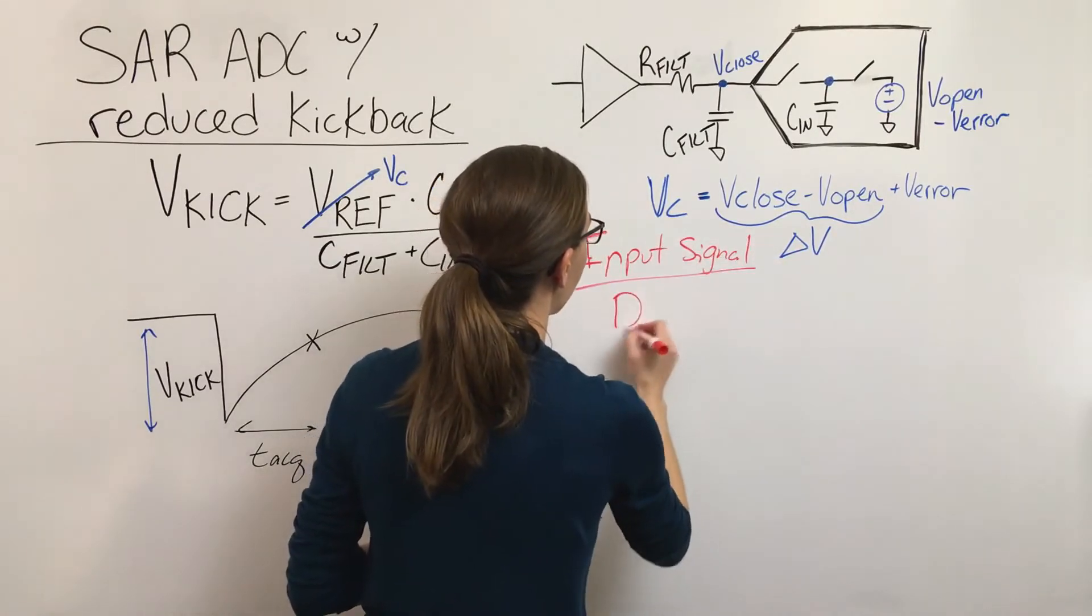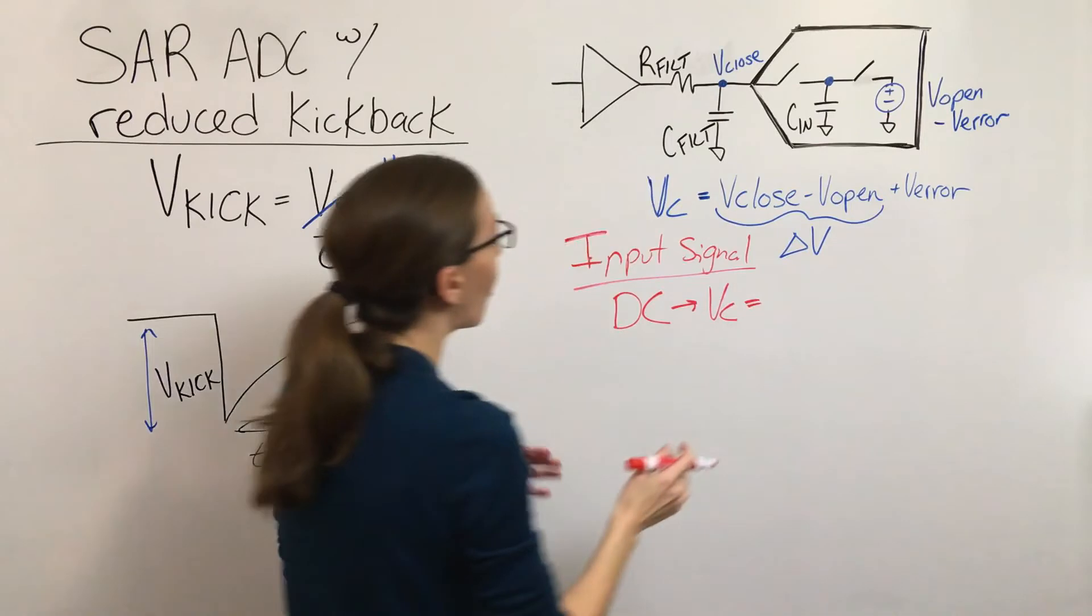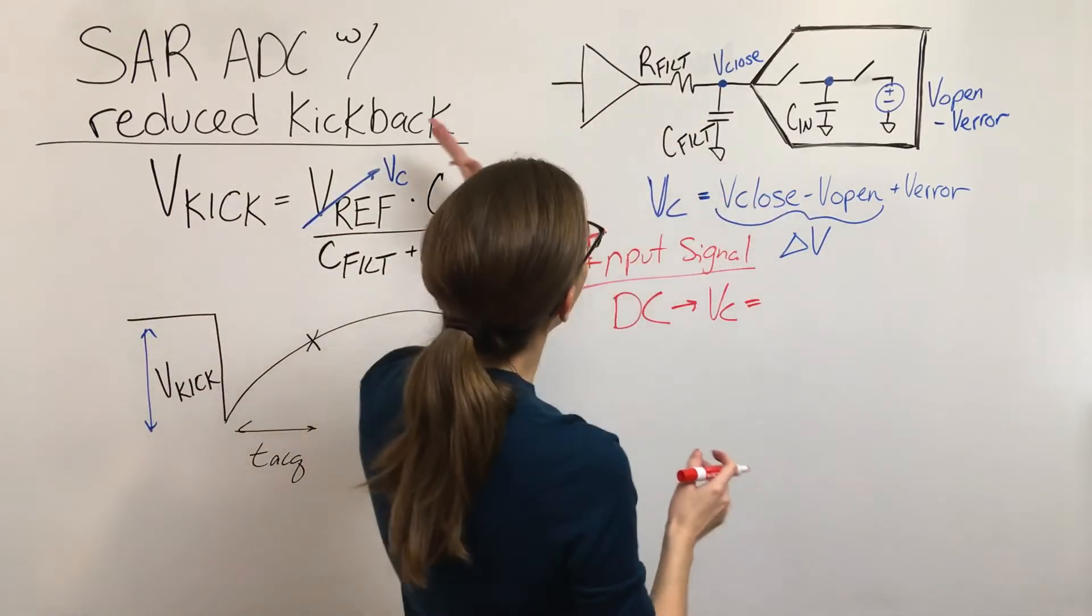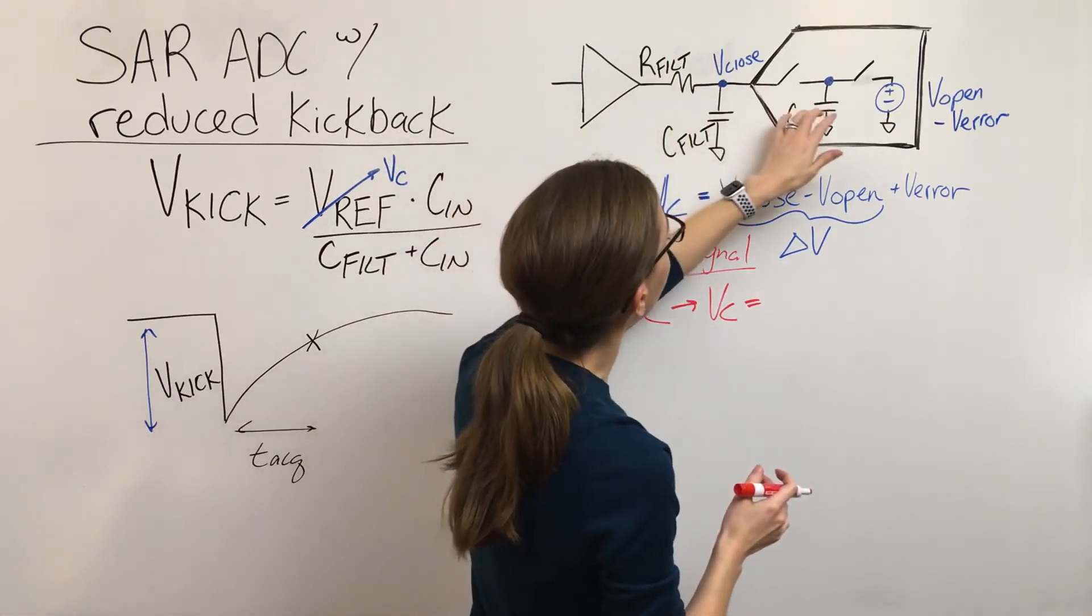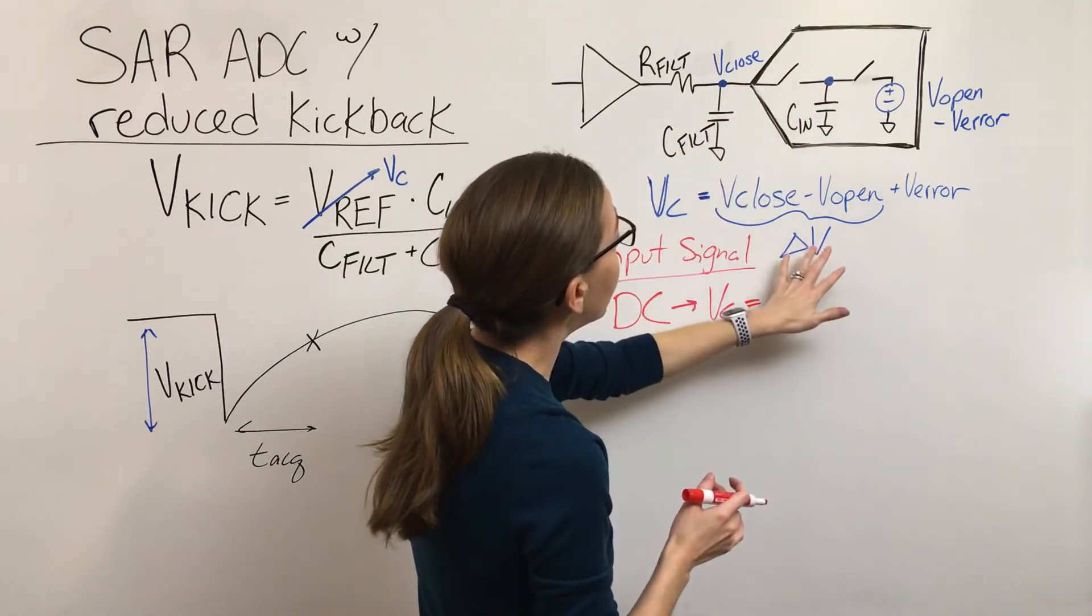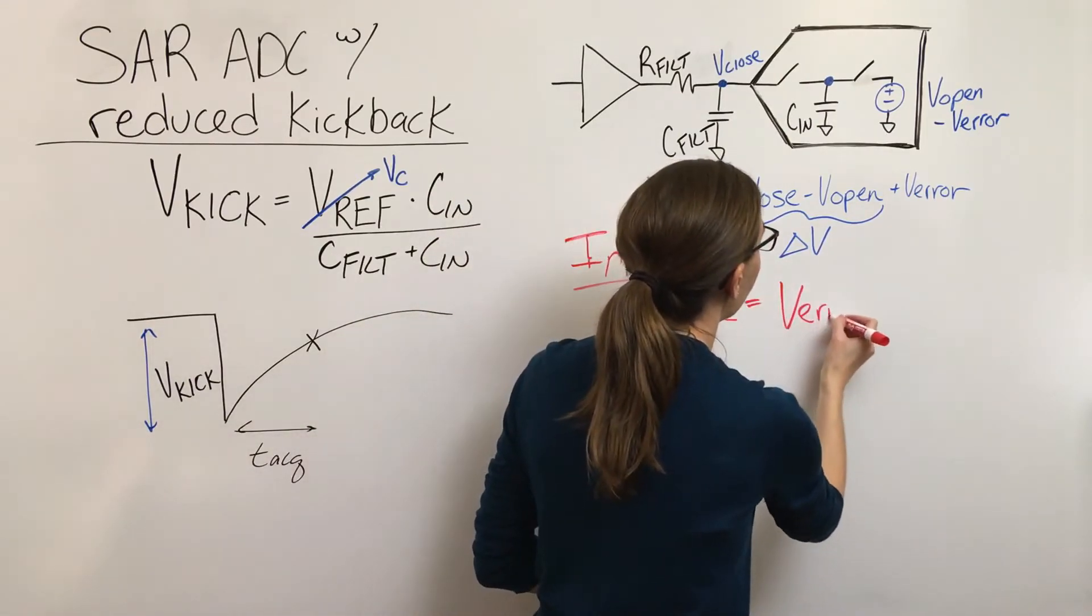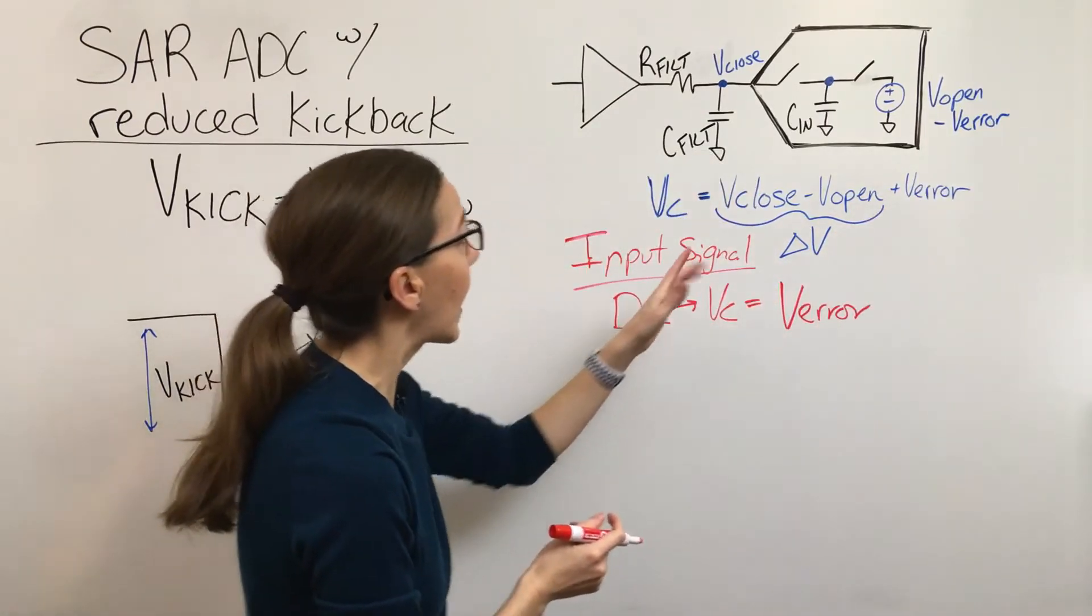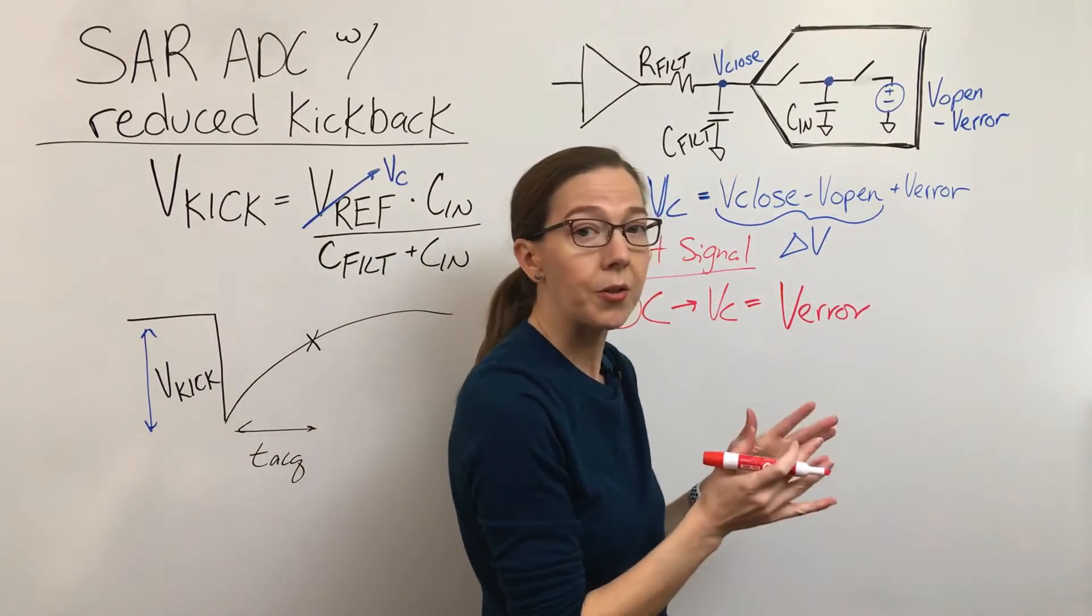All right. So if we think about things in terms of DC, which in this case is kind of a best case scenario. For DC, as these switches are opening and closing, this voltage coming in is constant. So that means that the voltage when the switch opens and the voltage when the switch closes will be equal. So this delta V is going to be zero. And so the only voltage that we have to worry about settling is this error term. And for these ADCs that have this circuitry in place, the error term can be 10 millivolts to 100 millivolts.